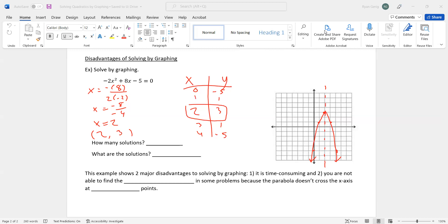So you're like, okay, there's nothing really too hard about that. Here's the part that's tricky. How many solutions does this have? A lot of people are going to say zero. That's not true. How many times does it cross the x-axis? Well, it crosses twice. It crosses here and it crosses here. What are those solutions? We don't know. They're not good numbers. This example shows two major disadvantages to solving by graphing. One, it's time-consuming. Each problem takes about five minutes. And two, you're not able to find the solutions in some problems because the parabola doesn't cross the x-axis at nice points.